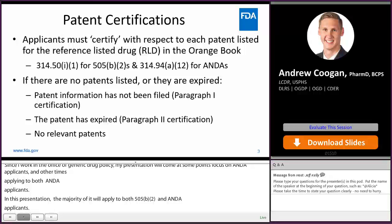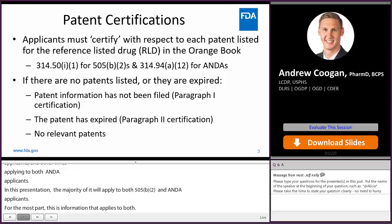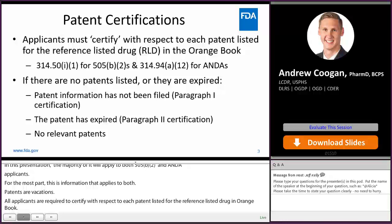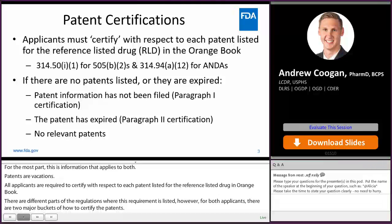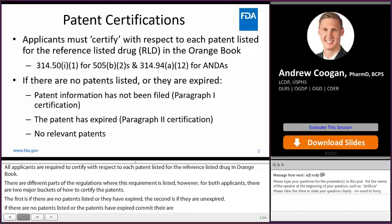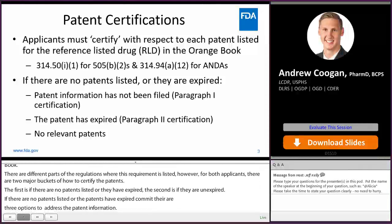Patent certifications. All applicants, both 505B2 and ANDA applicants, are required to certify with respect to each patent listed for the reference listed drug in the Orange Book. There are two major buckets of how to certify patents. The first is if there are no patents listed or they have expired — applicants can submit a paragraph 1 certification stating that patent information has not been filed, a paragraph 2 certification saying the patents have expired, or a no relevant patent statement.